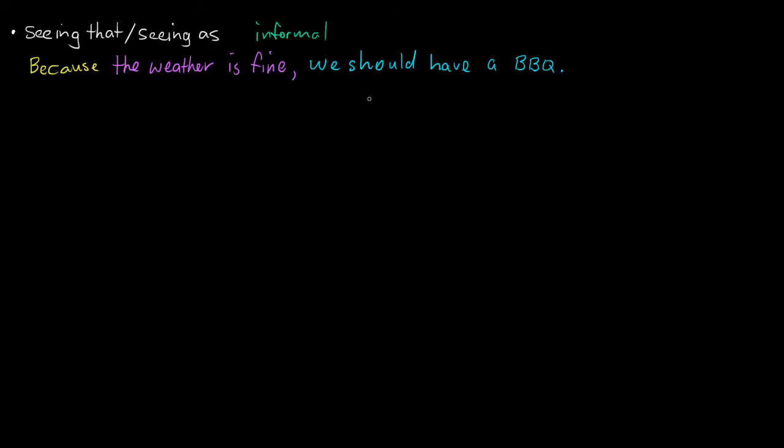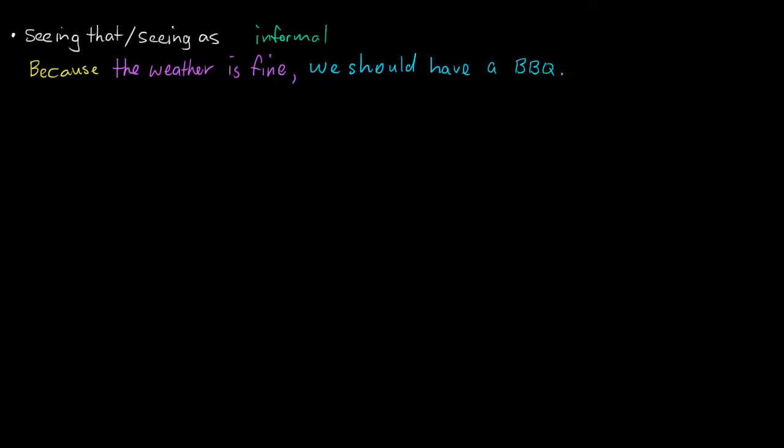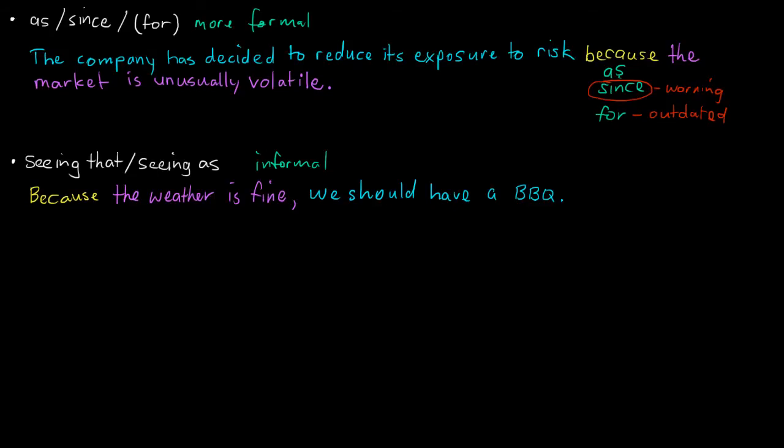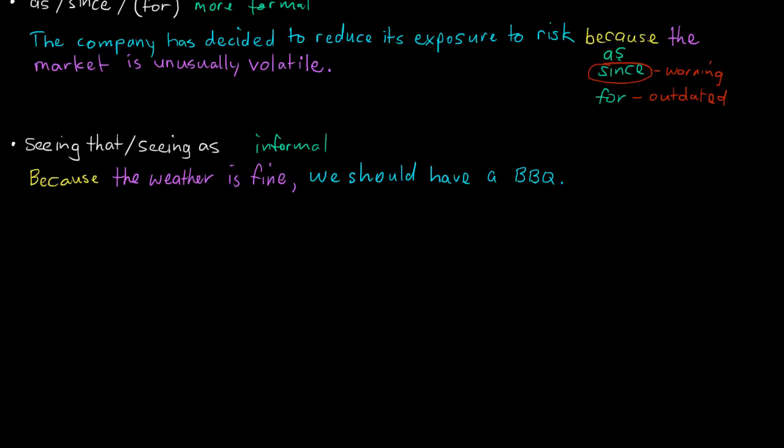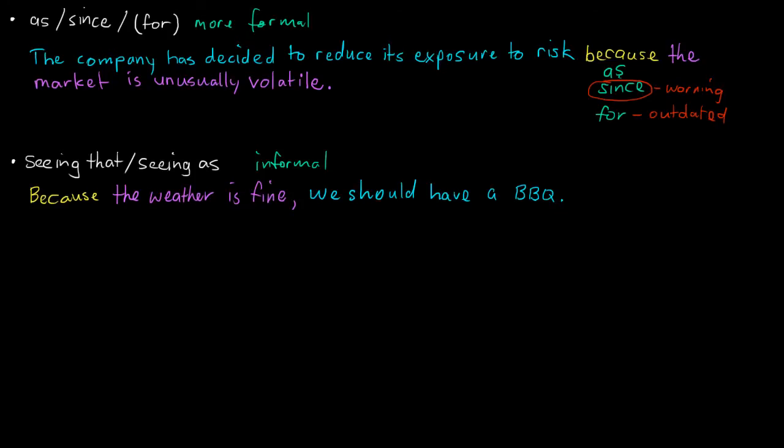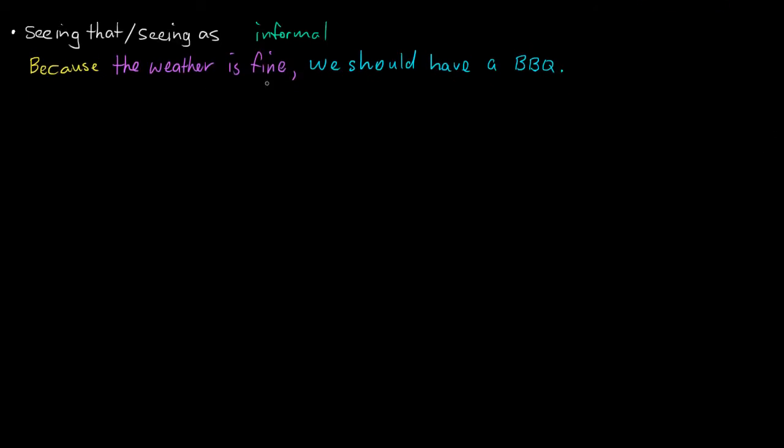Now having barbecues and deciding whether to have a barbecue - that's a fairly informal context, unlike the one above where we're talking about our company and the outlook for the company, which is a fairly formal context. So we use these formal coordinating conjunctions here. Being relatively informal in context, we can use seeing that or seeing as. And so you would just simply swap them in: Seeing that the weather is fine, we should have a barbecue.